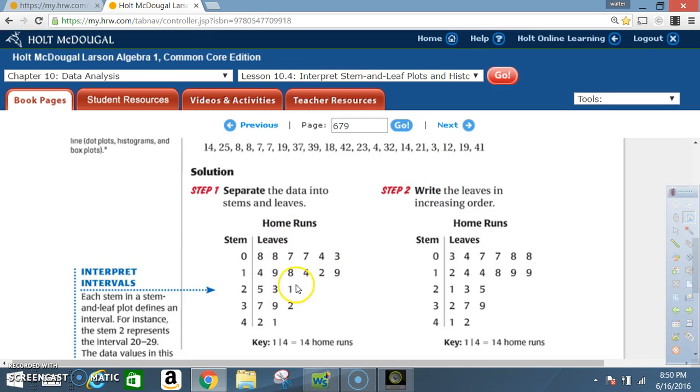For the numbers in the twenties you're going to have two five, that's twenty-five, two three, that's twenty-three, two one, that's twenty-one. Then of course you got thirty-seven, thirty-nine, and thirty-two, and then finally you have forty-two and forty-one. So that's how you read a stem and leaf plot.